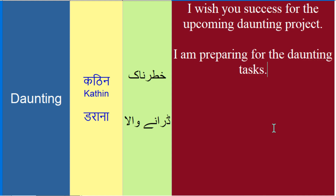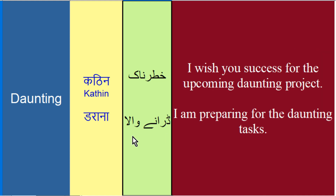Daunting tasks — ke jo aane waale mushkil tasks hain, jo mujhe kaam karne hain, aane waale khaternaak kaam hain, daraane waale jo intimidate karne hain — un ke liye mein apne aap ko prepare kar raha hoon. Yaani ke mein unhe karne ke liye basically apne aap ko prepare kar raha hoon. Mein taiyaari kar raha hoon aane waale khaternaak kaamon ke liye — I am preparing for the daunting tasks.